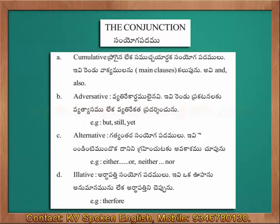Third: Alternative conjunctions — gatyantra samyoga padhalu — these show that one of two alternatives is chosen, rejecting the other. Examples: 'either/or,' 'neither/nor.'